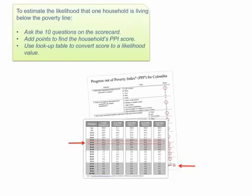In this example, this household has a 42.6% likelihood of living below the $2.50 per day poverty line.